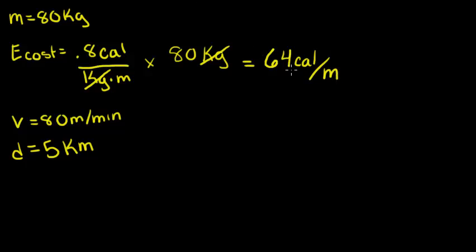He's going to burn 64 calories for every meter he walks. Since he walks 5 kilometers, let's convert this into meters. We can multiply this distance times his energetic cost to find the total number of calories he'll burn for 5,000 meters.